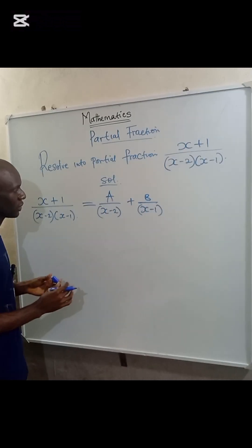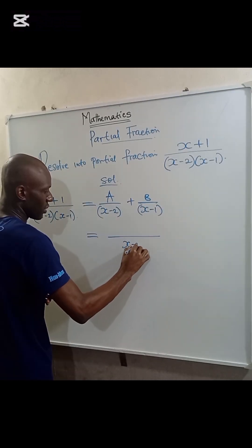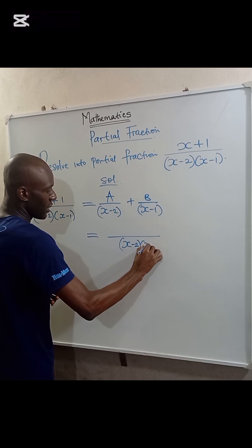So at this point we can take LCM here. X minus 2 multiplied by X minus 1.